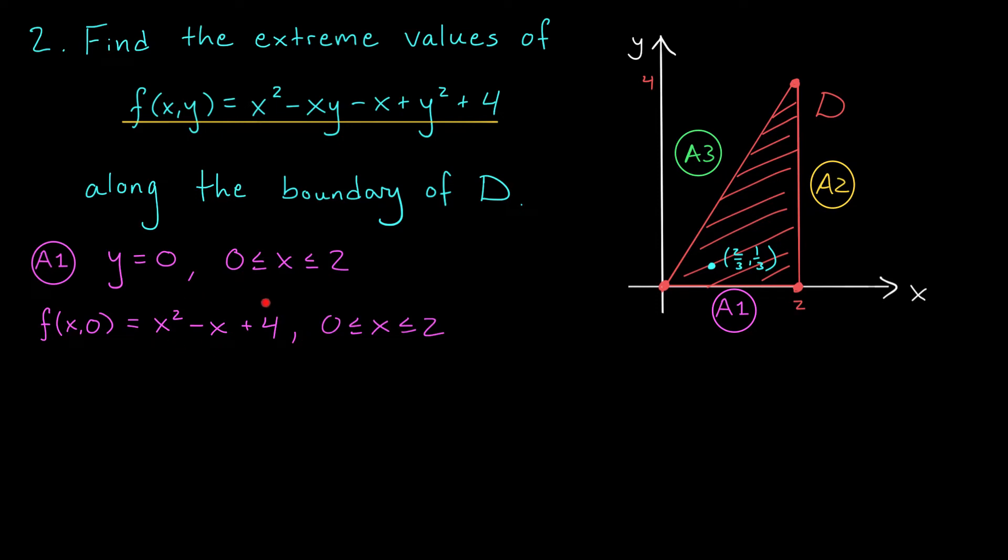How do you find the critical points of this function? That's right. You take the derivative and see where it's 0 or it doesn't exist. The derivative of this expression, f'(x,0), is 2x minus 1. That's going to exist everywhere, and it's equal to 0 when x is 1/2.